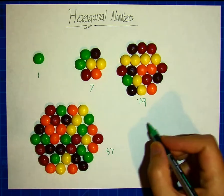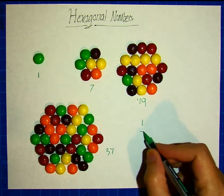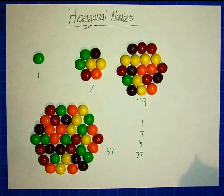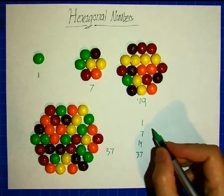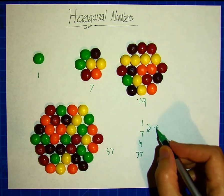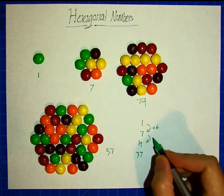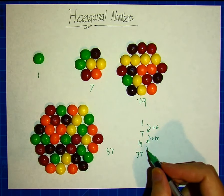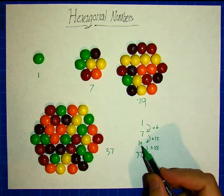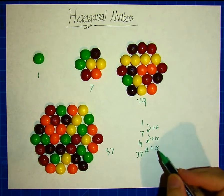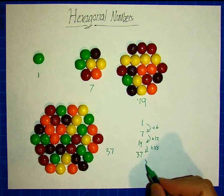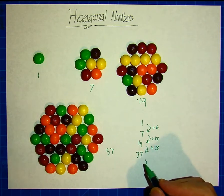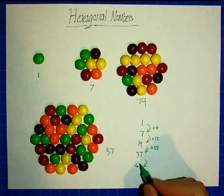So look at these numbers: we have 1, 7, 19, 37. What is the pattern? It's not super obvious at first, but you notice to get from here to here you add 6, and then to get from here to here you add 12. So 6, 12 — what would be the next one in that sequence? Is it plus 18? It is — 37 minus 19 is 18, it does check out. So what would be after that? Would you have to add 24? Well, what's 37 plus 24? Grab your calculator and you figure out it's 61.